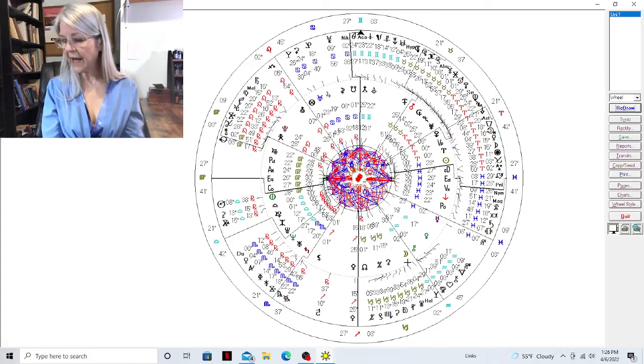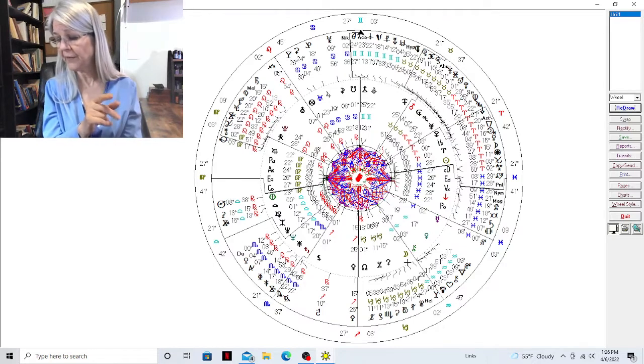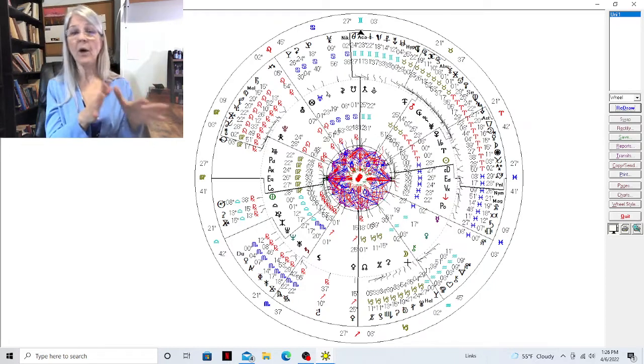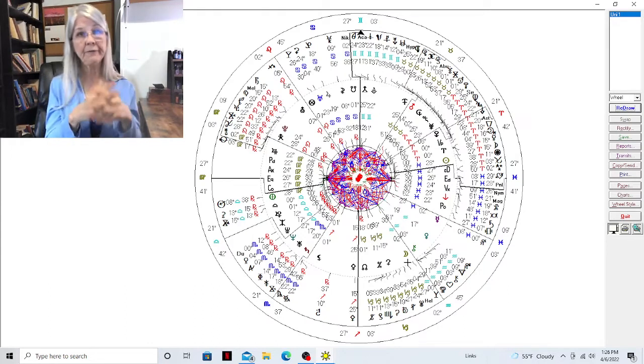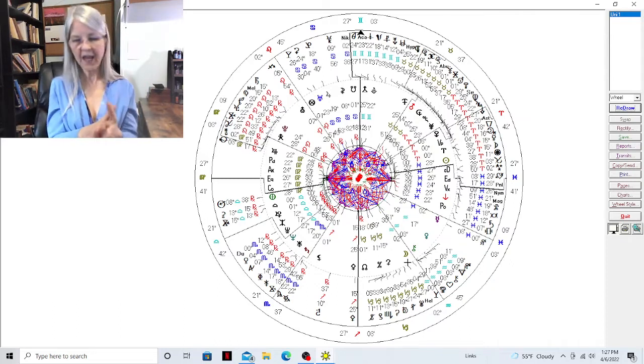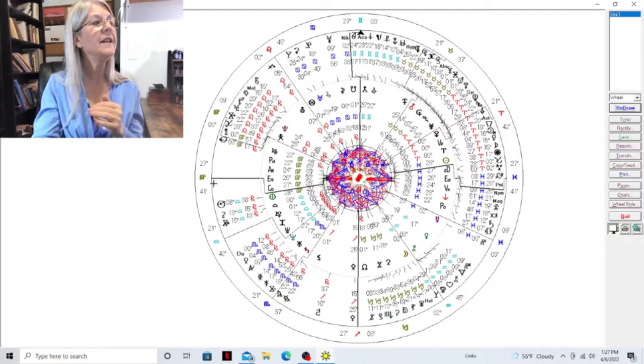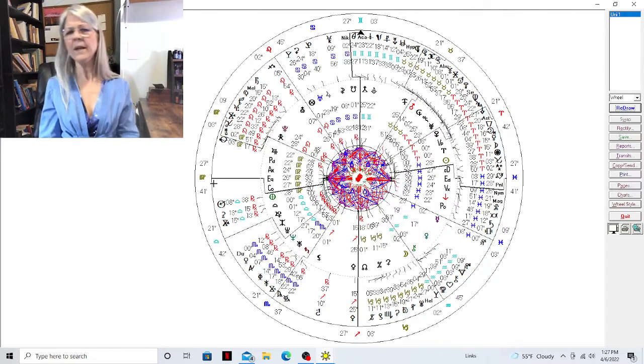In Bruce Willis's chart, the Broca aphasia is sitting at 2 degrees 16 minutes of Aquarius. The first thing you would do is go to the chart and say what else sits there? The first thing you're going to see is the moon is sitting there and Chiron, which is representative of turning points.